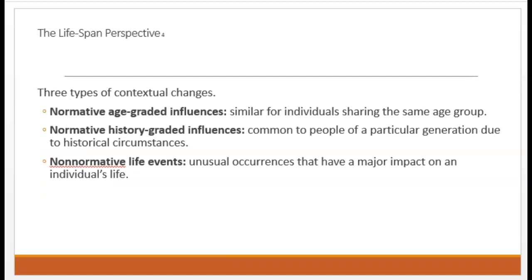Going back to what I said about development being contextual, nobody lives in a vacuum. There are a few different ways that our context can influence our development. One is age-graded influences — experiences that are common to almost everyone in the same age group. For example, most teenagers are experiencing puberty, women over 50 are experiencing menopause, children around 6 years old are starting formal schooling, and adults over 65 are hoping to retire. Some contextual changes are called normative history-graded influences — experiences that are common to people of a particular generation due to historical circumstances. For example, a lot of people who remember living through the Great Depression tend to be more thrifty with their money because of their experiences.